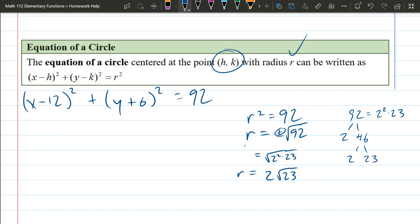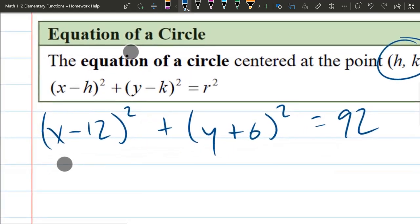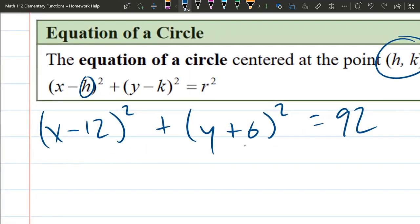So we have an x and a y-coordinate for the center. Let's look at the x first. The x-coordinate of the center is h. And it should be pretty clear... wait, h is from x minus h. And if you look at this, we have x minus 12. So h is just 12.